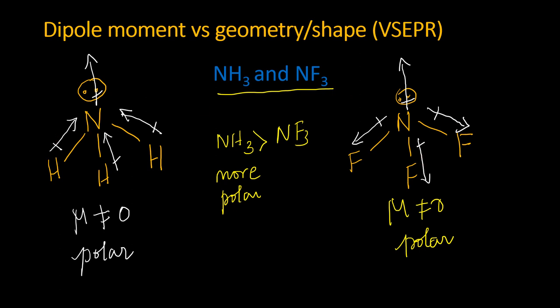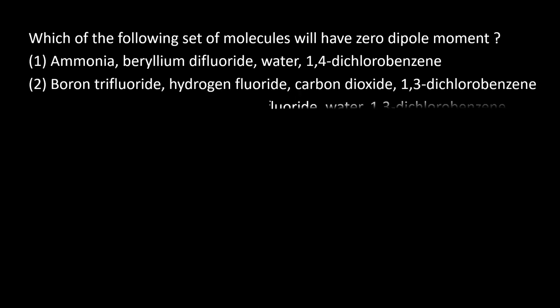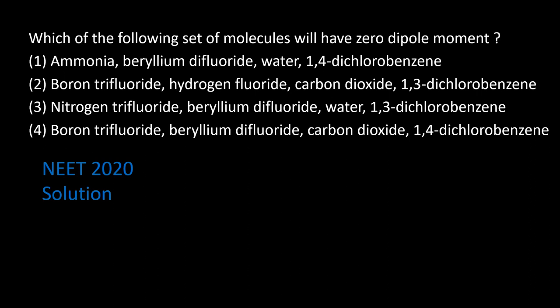Now returning to the NEET question: we must identify the set with all molecules having zero dipole moment. Option 1 contains NH₃, which has a dipole moment — ruled out. Option 2 contains HF, which has a dipole moment — ruled out. Option 3 contains NF₃ and water, both having dipole moments — ruled out. That leaves Option 4 with BF₃, BeF₂, CO₂, and 1,4-dichlorobenzene.